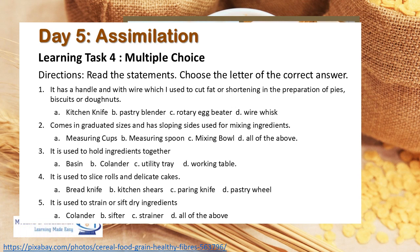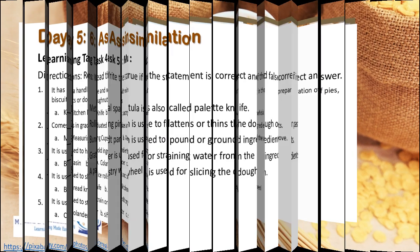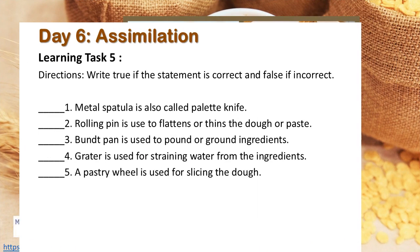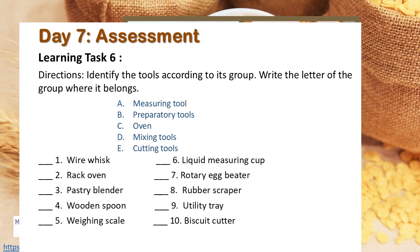Day 5, Assimilation — Learning Task No. 4 Multiple Choice Directions: Read the statements and choose the letter of the correct answer. Day 6, Assimilation — Learning Task No. 5: Write true if the statement is correct and false if it is incorrect. Day 7, Assessment — Learning Task No. 6 Directions: Identify the tools according to their group and write the letter of the group where each belongs.